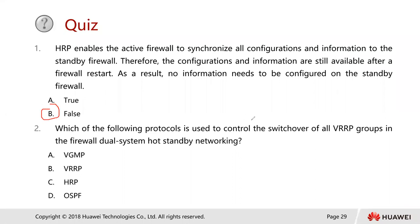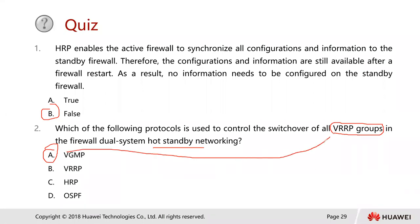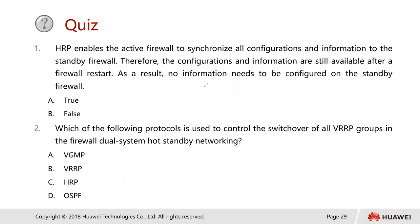Next question: Which of the following protocols is used to control the switchover of all VRRP groups in the firewall dual system hot standby networking? The answer is A — VGMP, the VRRP Group Management Protocol. VGMP is the protocol that manages the switchover of VRRP groups in a unified manner. That brings us to the end of this chapter on dual system hot standby.